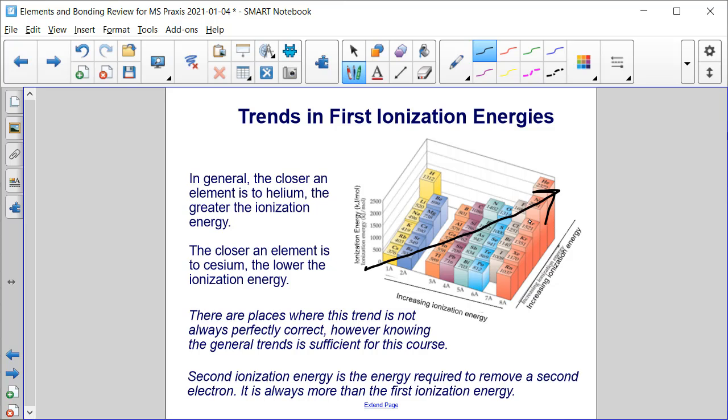Second ionization energy is the energy required to remove a second electron, and it is always more than the first ionization energy.